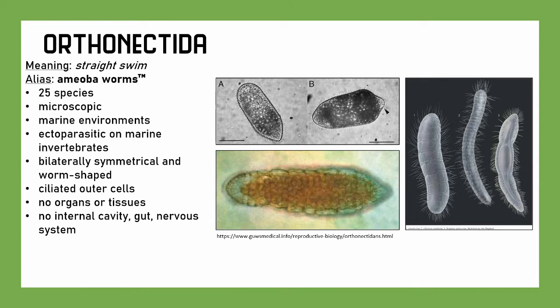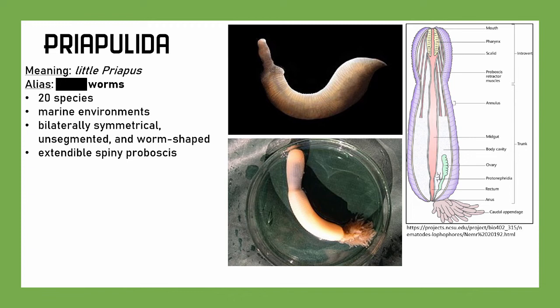Getting into questionable territory, we have Priapulida, which means 'little priapus' — referring to a male reproductive organ. Let's just call these obelisk worms. There are about 20 species in marine environments. They're bilaterally symmetrical and unsegmented, though they have ring-like annuli on the outside — not true segments, just ridges. They are worm-shaped, and also shaped like another thing — hence their name. They have an extendable spiny proboscis.